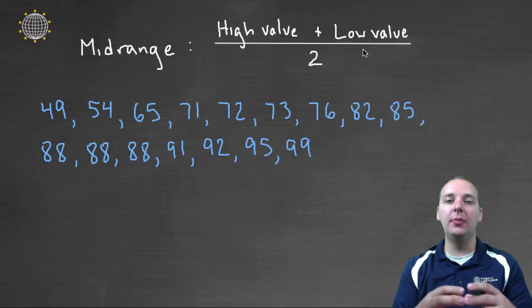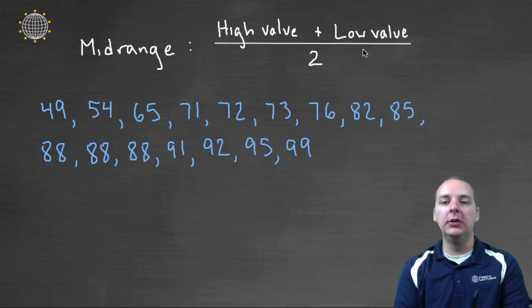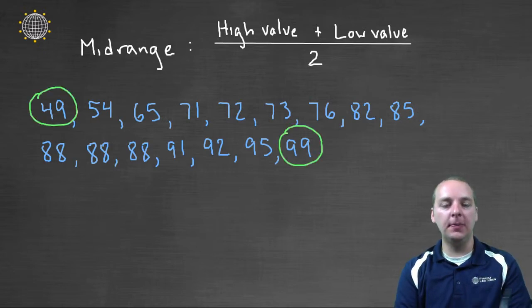In other words, we add them up and divide by two. So if you look here on my screen, my low value is forty-nine. My high value is ninety-nine.